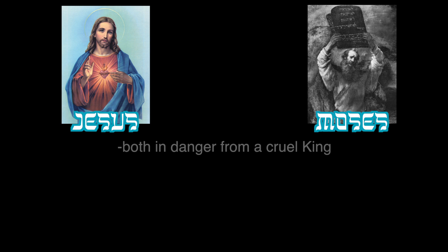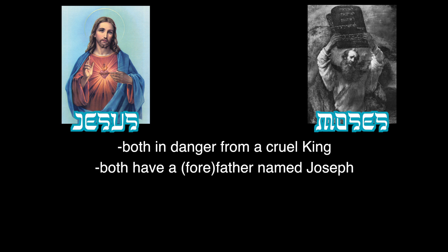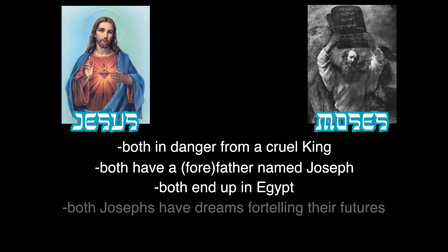In Matthew, the infant Jesus, like Moses, is in danger from a cruel king. And like Moses, he has a forefather named Joseph who goes down to Egypt. Like the Old Testament Joseph, this Joseph has a father named Jacob, and both Josephs receive important dreams foretelling their future.